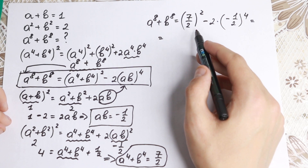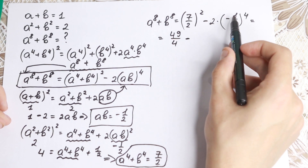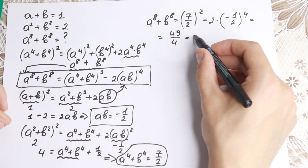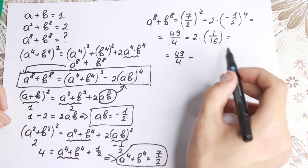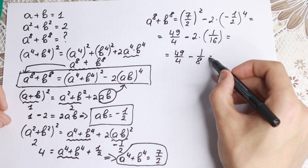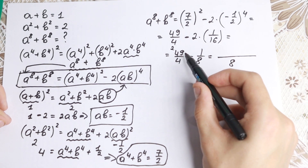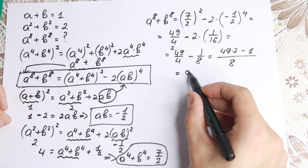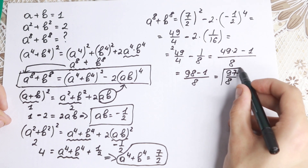7 over 2 squared gives 49 over 4. Raising both numerator and denominator: minus one half to the fourth gives 1 over 16, so minus 2 times 1 over 16 gives minus 1 over 8. So we have 49 over 4 minus 1 over 8. The common denominator is 8: 49 times 2 is 98, minus 1, giving 97 over 8. This is our final answer.